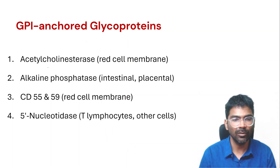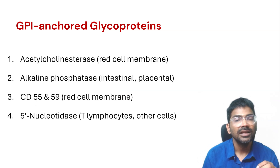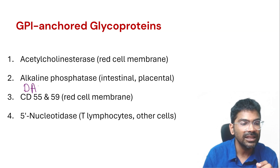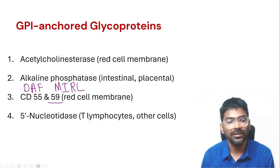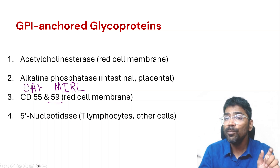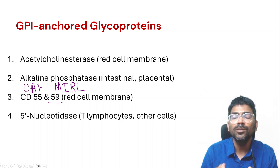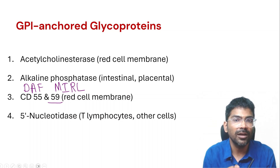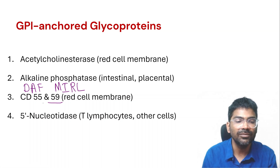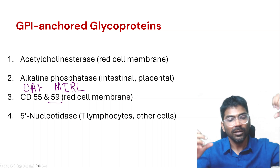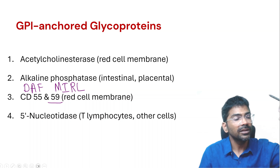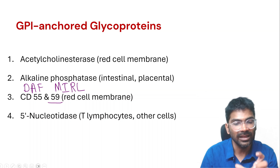Examples of GPI-anchored proteins include: RBC membrane-anchored acetylcholinesterase, membrane-anchored alkaline phosphatase, CD55 (decay accelerating factor), and CD59 (membrane inhibitor of reactive lysis). CD55 and CD59 are crucial complement inhibitors that prevent the complement system from being mistakenly activated on the RBC membrane surface. After these proteins are formed, they are attached to the membrane by adding a GPI anchor.